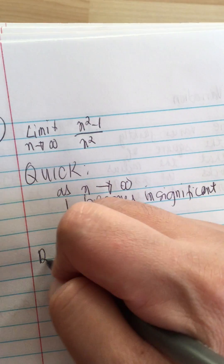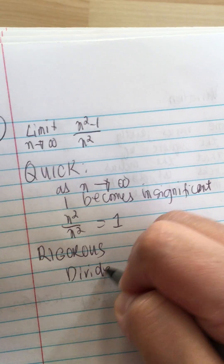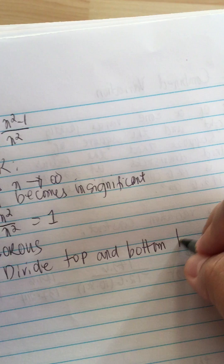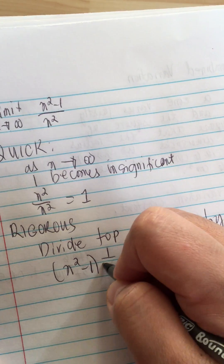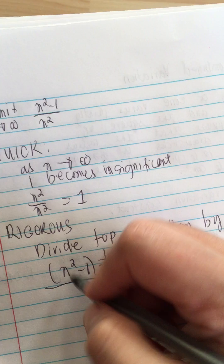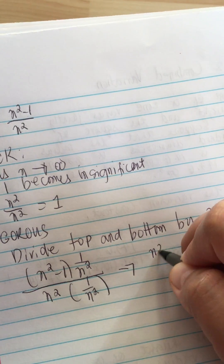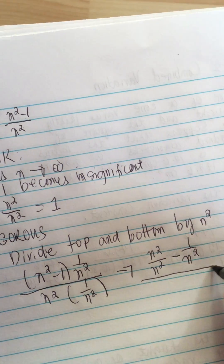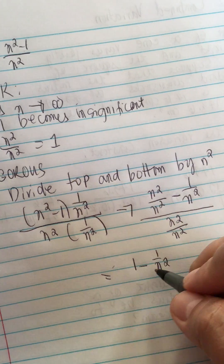Now the formal way is to divide top and bottom by n². So we have (n² - 1) over n², multiplied by (1/n²) on top and bottom. This gives us n²/n² minus 1/n², all over n²/n², which equals (1 - 1/n²) over 1.